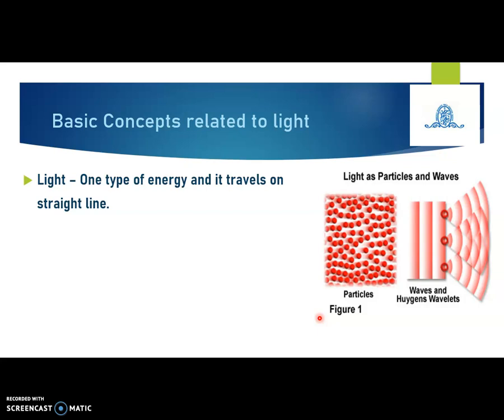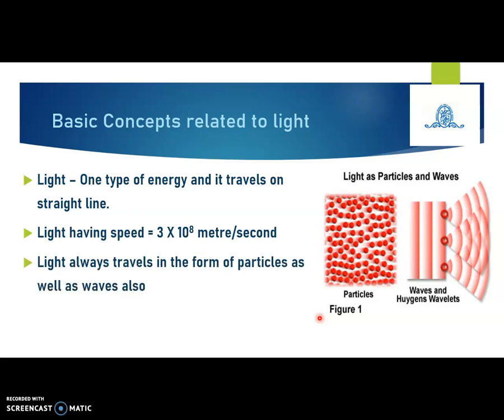As we know, energy always appears in different forms. Light is one type of energy and it always travels in a straight line. The speed of light in air or vacuum is always very high, that is 3 × 10⁸ meter per second. Light always travels in the form of particles as well as waves — that means light shows both particle and wave nature.